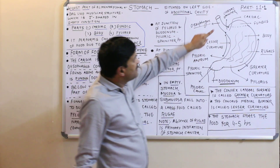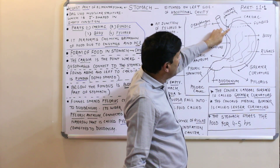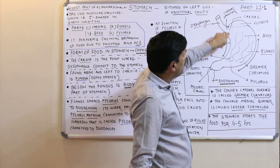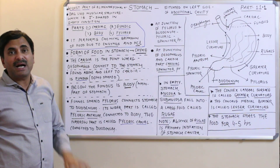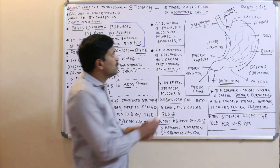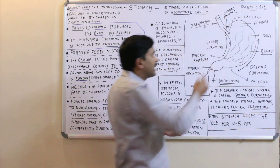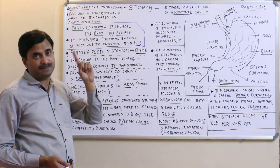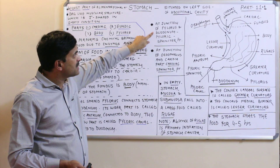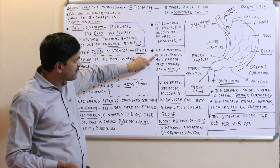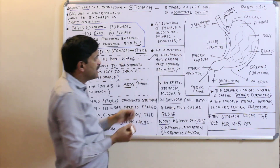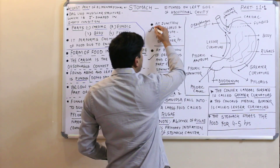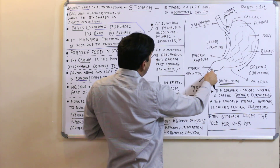At the junction of the esophagus and the cardiac part of the stomach, a valve is present known as the cardiac sphincter. This cardiac sphincter allows food to come from the esophagus to the stomach but prevents the back flow of food from the stomach to the esophagus.